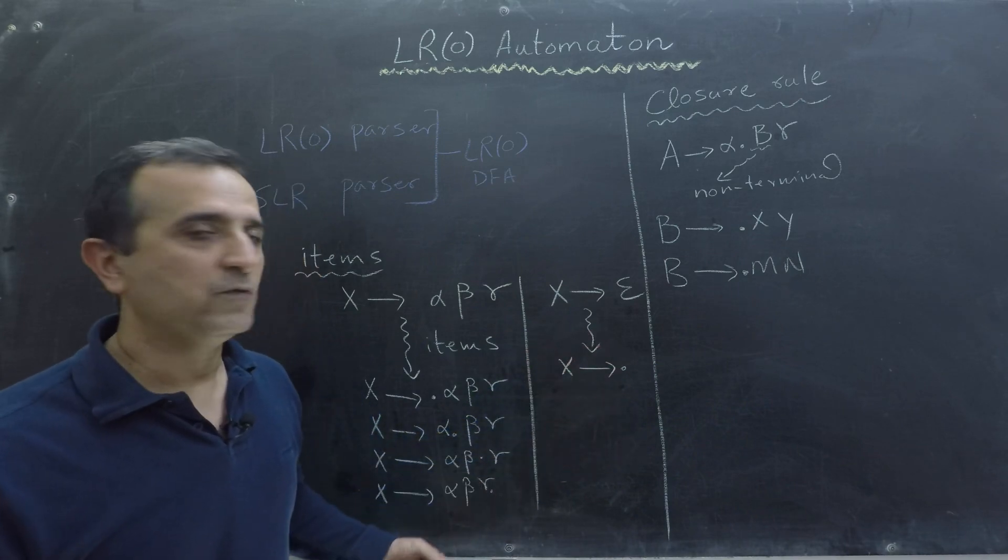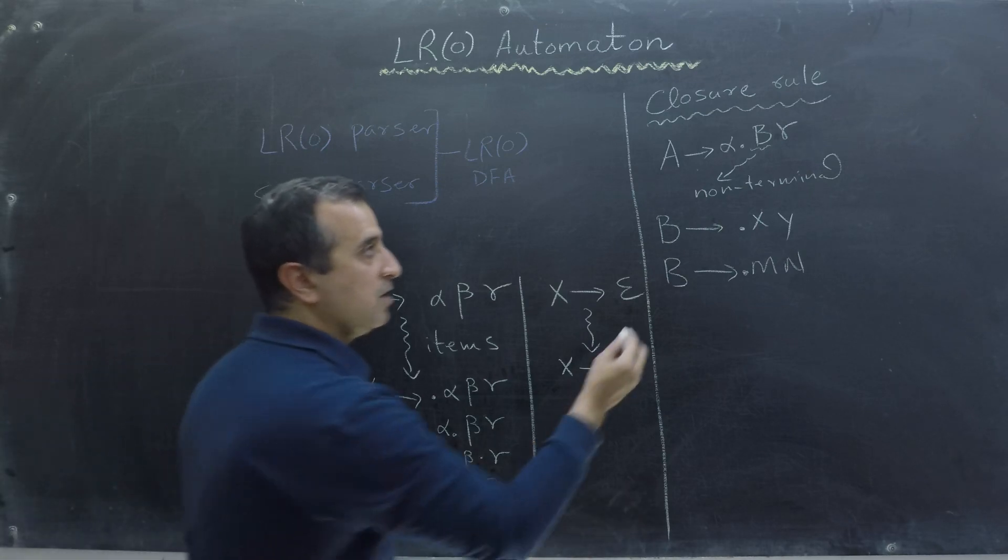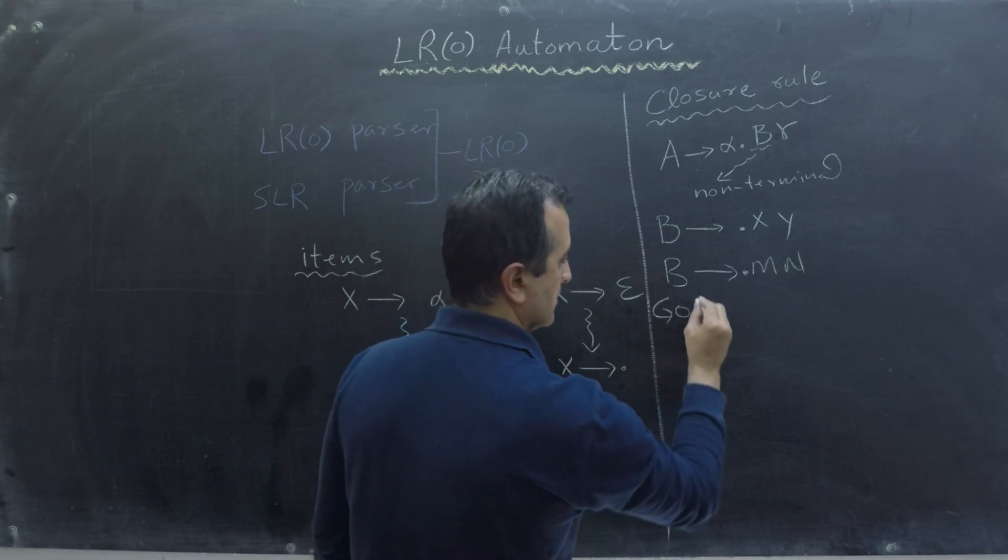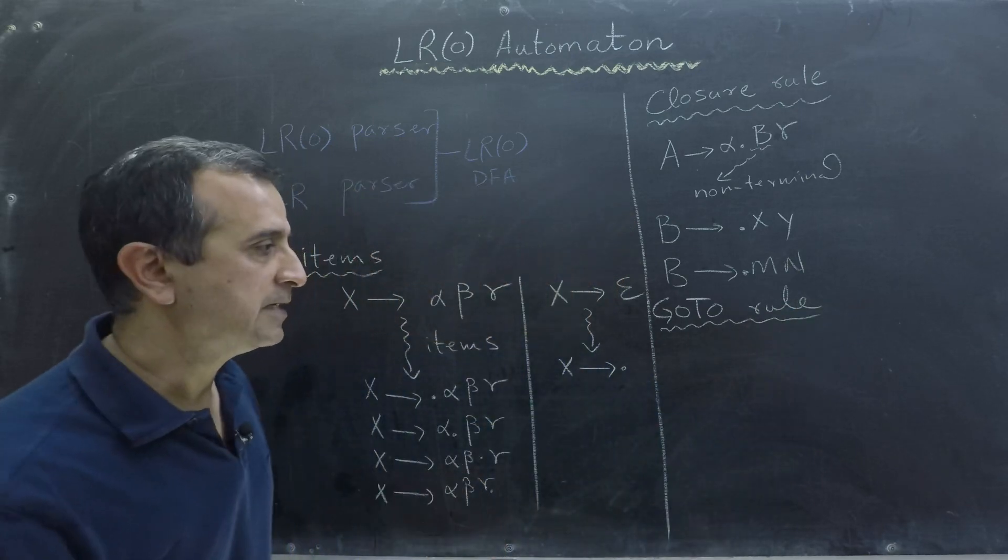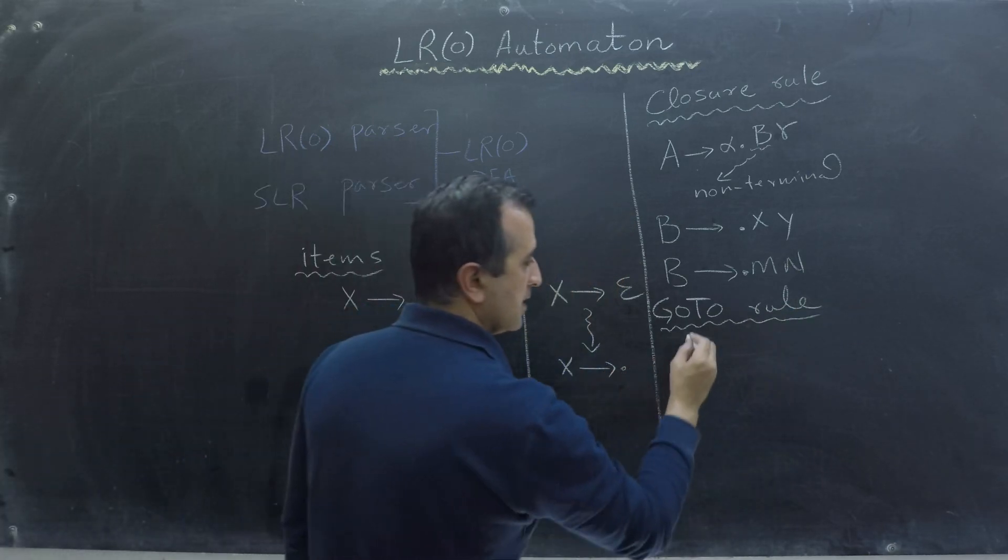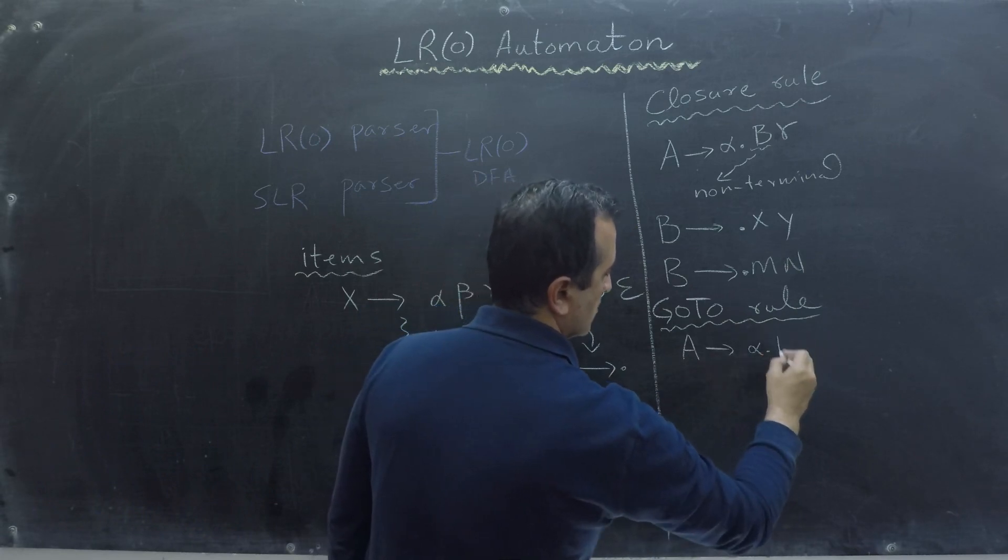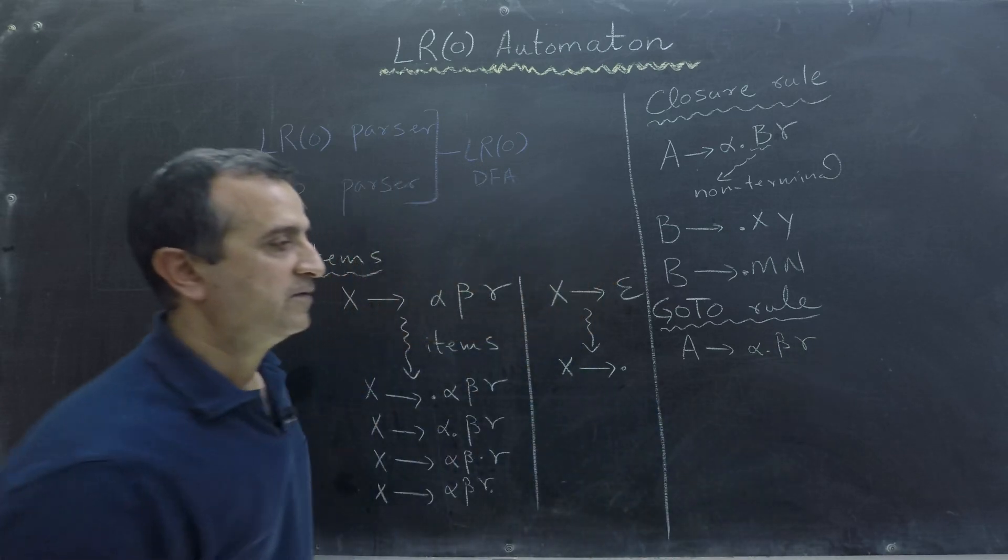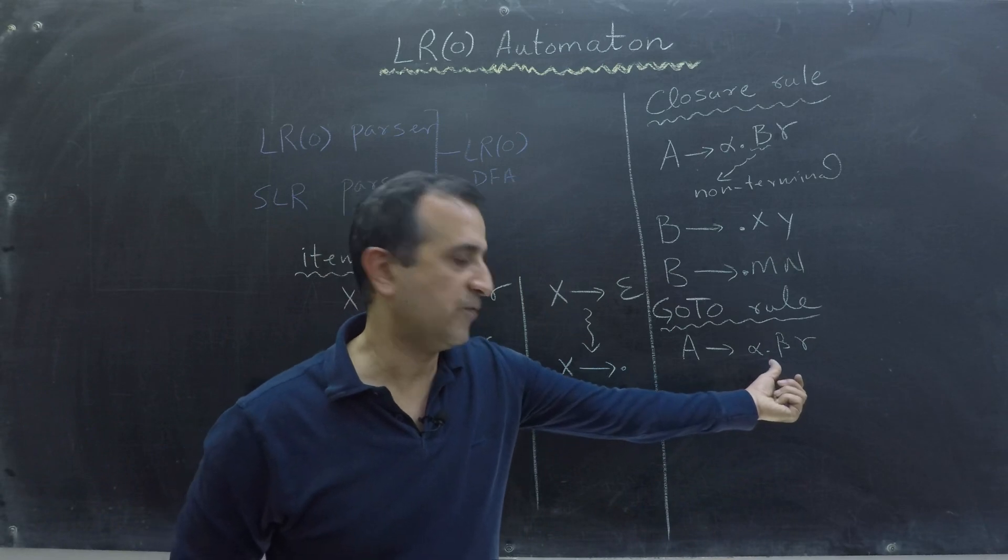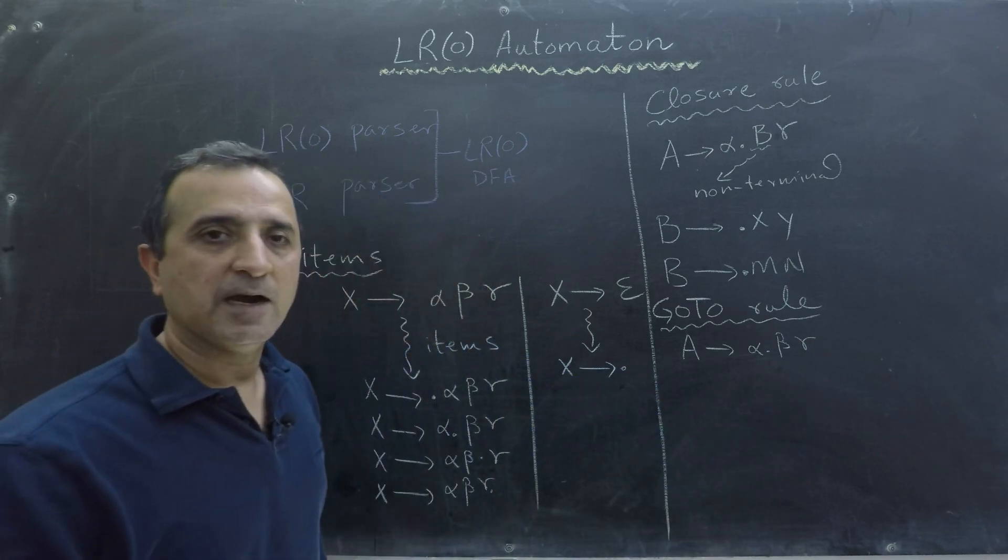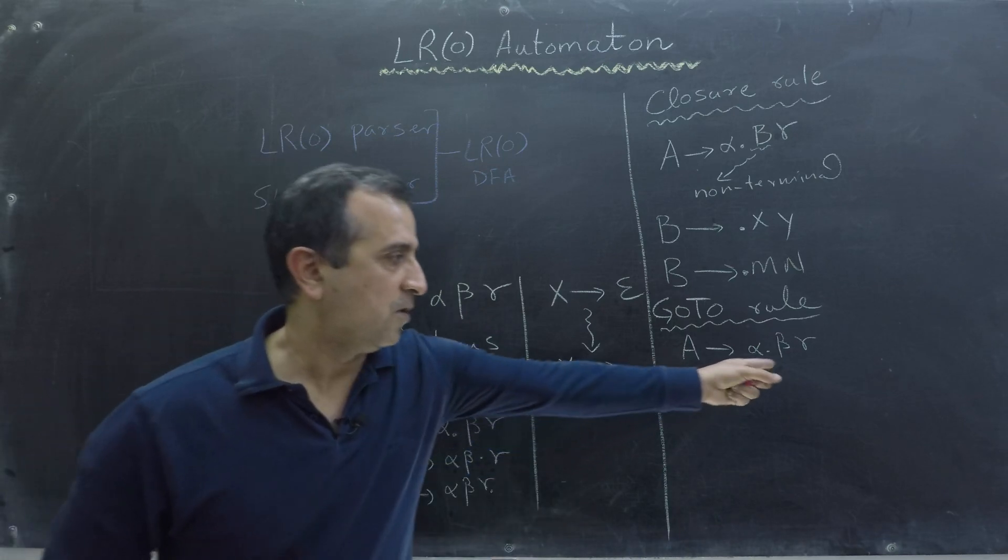The second rule that helps us to create transitions of DFA is called GoTo rule. So GoTo rule states that if I have a production A goes to alpha say dot beta gamma where beta could be terminal or non-terminal and my dot is before beta, then I must create a transition from this state of DFA on beta.